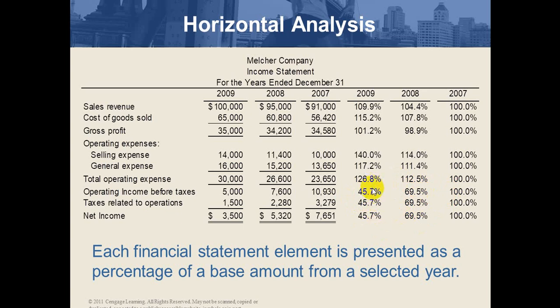In the exam, if the percentage for operating income before tax, tax, and net income after tax are not the same, it means there is an error in your calculation. Each financial statement element in horizontal trend analysis is presented as a percentage of the base year amount from the selected year.